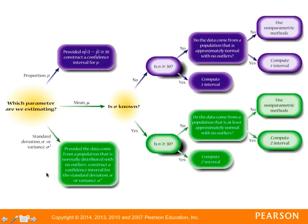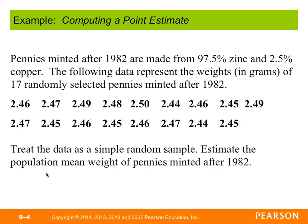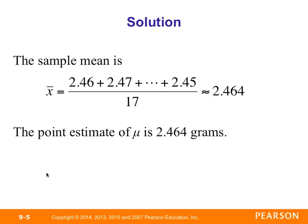I'm going to skip the standard deviation part since that's not covered in this class. So let's look at an example. We have pennies minted after 1982, made up of 97.5% zinc and 2.5% copper. The following data represents the weights in grams of 17 randomly selected pennies. We're treating this as a simple random sample and we want to estimate the population mean weight. We add up all observations and divide by 17 — the normal formula for finding the mean — and we get 2.464. The point estimate of mu is 2.464 grams.